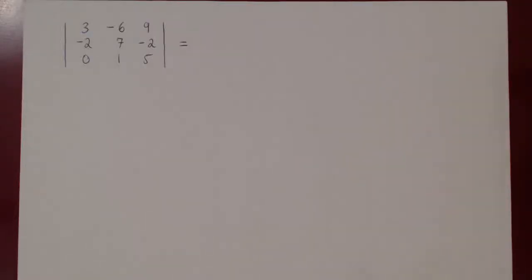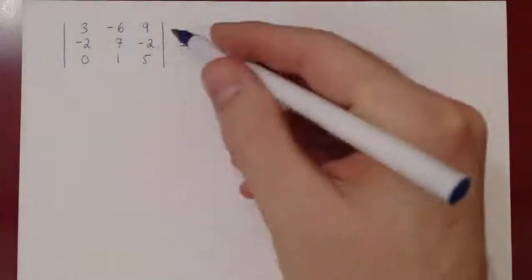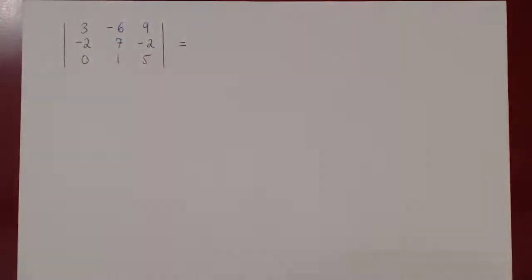Here's one really key example of the determinant. If you remember, to find the determinant — in this case of a 3x3 matrix — we can use cofactor expansion along any row or column of our choice. The question is: is there sometimes a best choice of row or column?